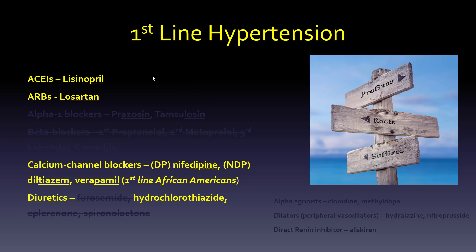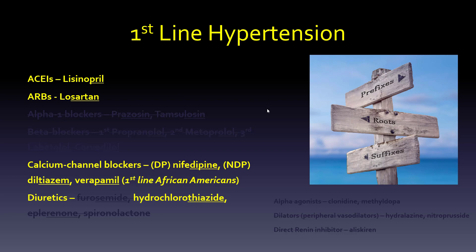Let's look at what first line is. First line includes the angiotensin-converting enzyme inhibitors like lisinopril, and the ARBs like losartan. Calcium channel blockers like nifedipine, diltiazem, and verapamil are first line in African Americans because of the poor outcomes with ACEIs. And diuretics — hydrochlorothiazide is certainly first line.